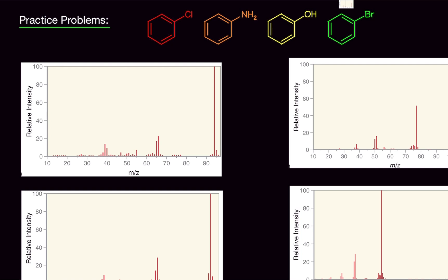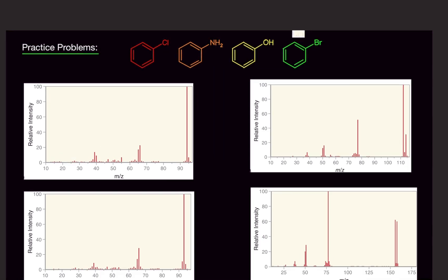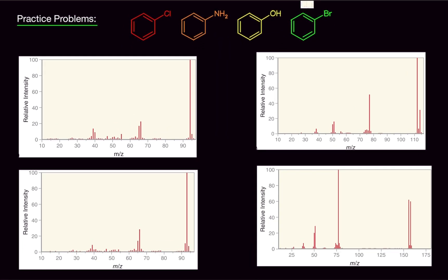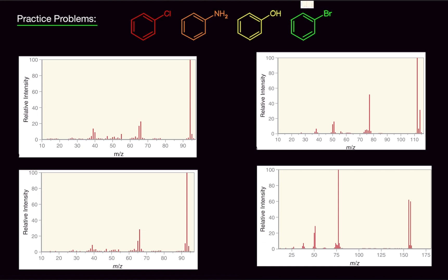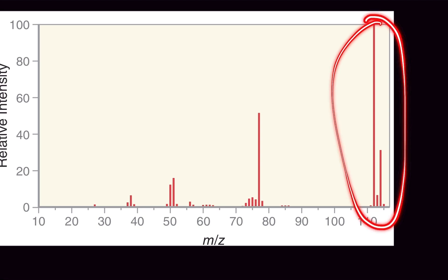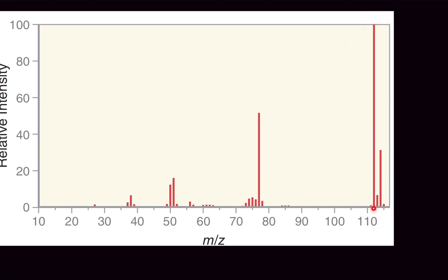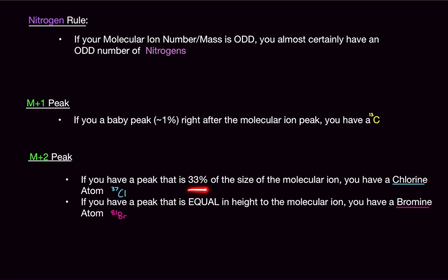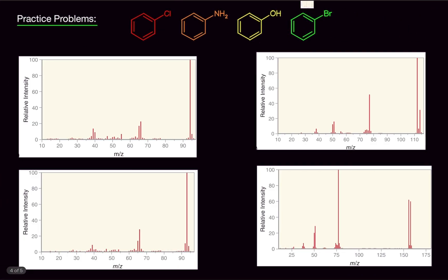For the practice problems, you can either count molecular weights directly or use the shortcut. Looking at the chlorine spectrum: the molecular ion is the last and tallest bar of the last grouping. Counting two spaces over, we see the M+2 peak is roughly 33 percent the size of the molecular ion — by definition that tells us chlorine is in the molecule. So this spectrum belongs to the chlorine compound.